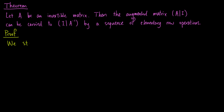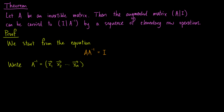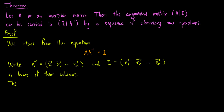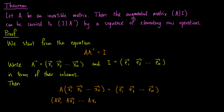To prove this, we start from the definition of inverses, which is the equation A × A⁻¹ = I. We write A⁻¹ as [x₁, x₂, …, xₙ] and I as [e₁, e₂, …, eₙ] in terms of their columns. So the equation becomes A × [x₁, x₂, …, xₙ] = [e₁, e₂, …, eₙ]. Using a property of matrix multiplication, the left-hand side is the matrix with columns Ax₁, Ax₂, …, Axₙ.